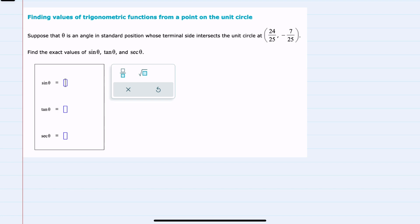In this example, we're asked to find sine, tangent, and secant for the angle that intersects the unit circle with an x value of 24/25 and a y value of negative 7/25. I'll start with our three base trigonometric functions: cosine, sine, and tangent.